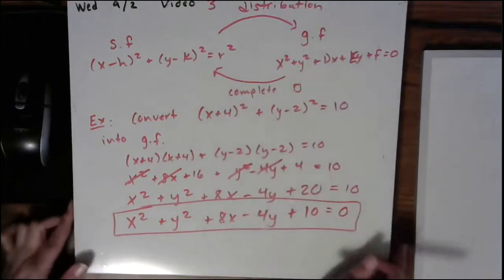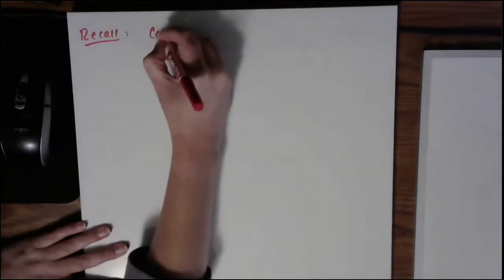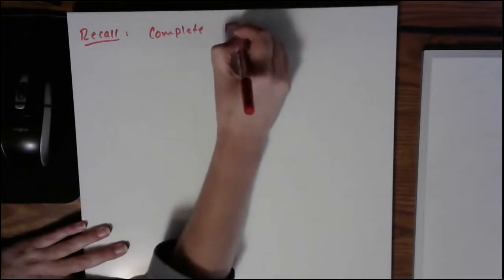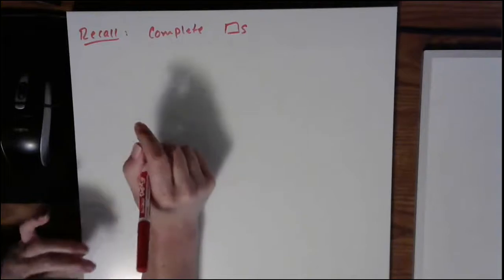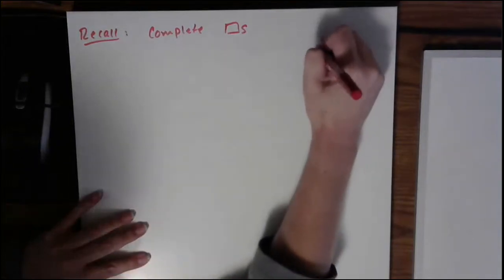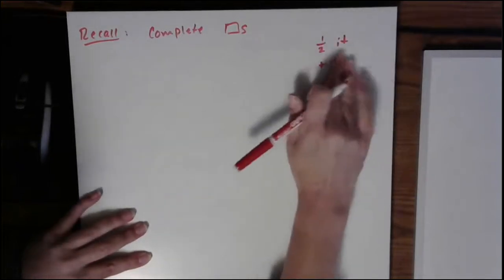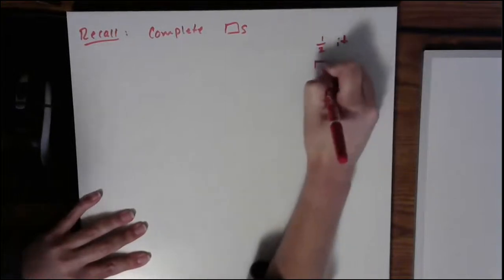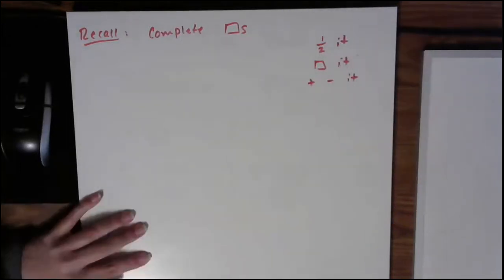But let's say you want to do this process in reverse. It's quite a bit more complicated because again, you have to do completing the square. So let's just practice completing the square. So let's go ahead and first write down a little three-step process that will help. What we're going to do is we're going to half it, we're going to square it, and then we're going to add and subtract it.